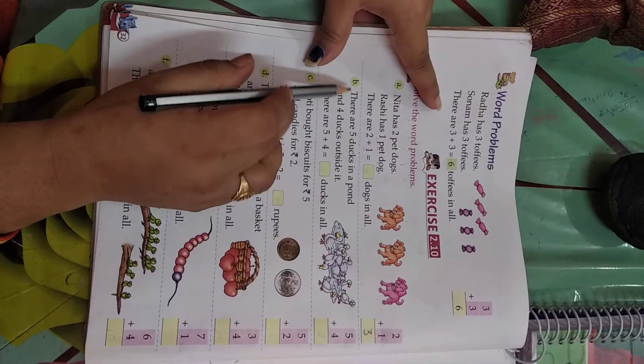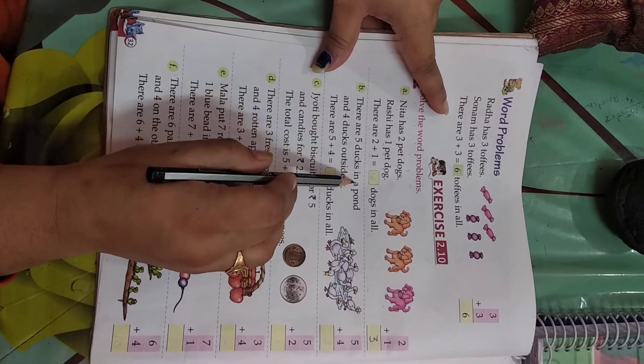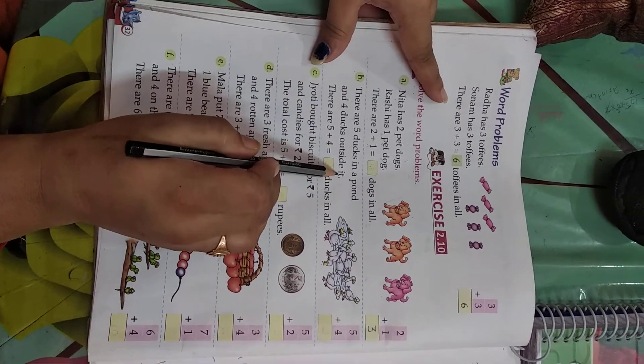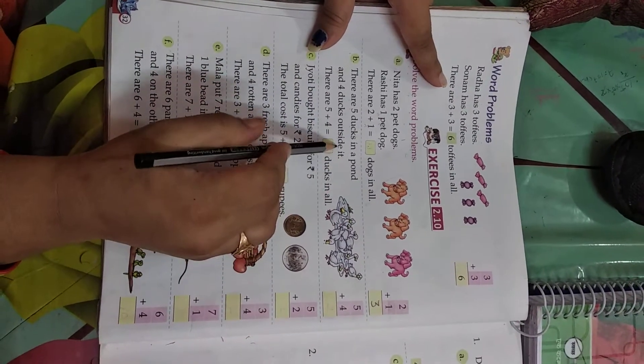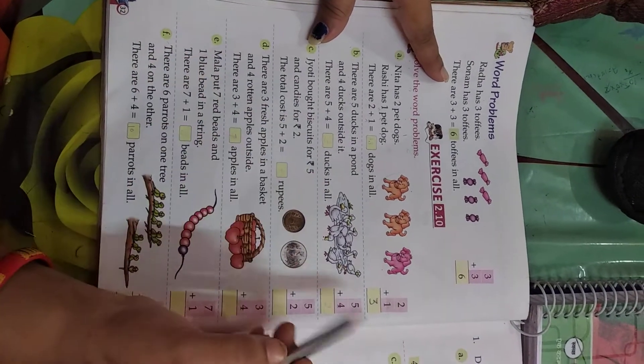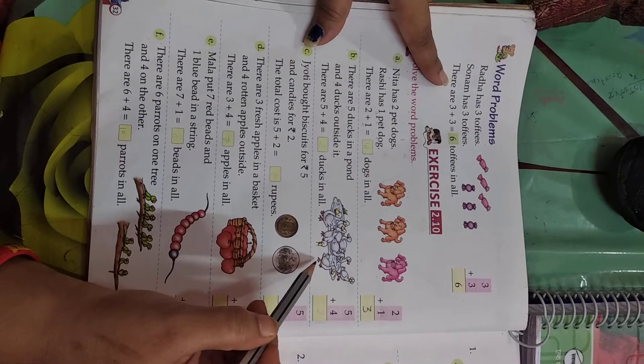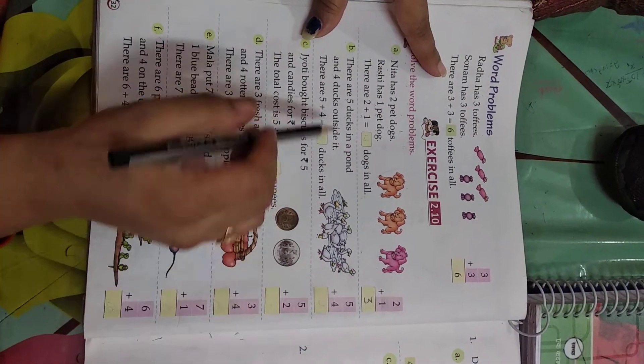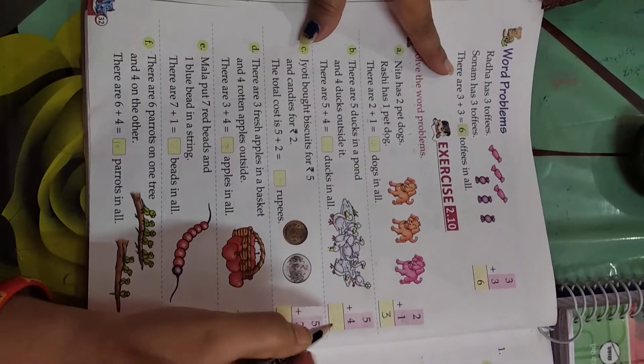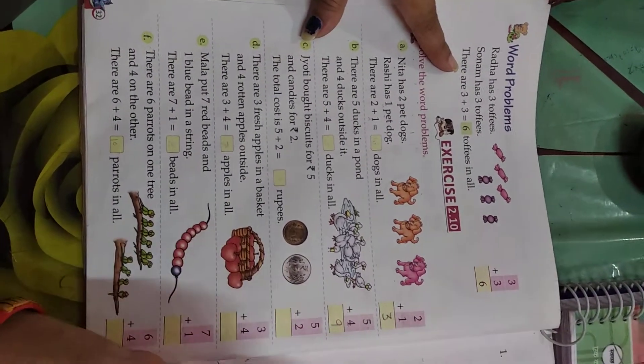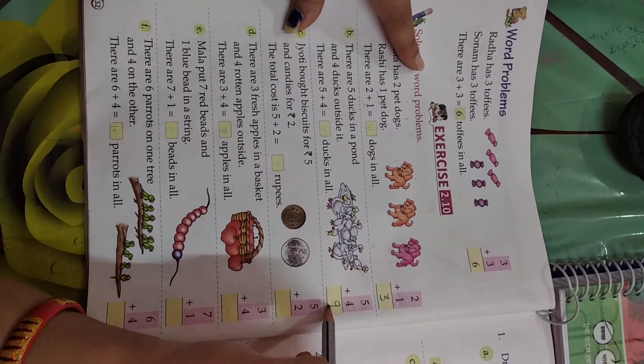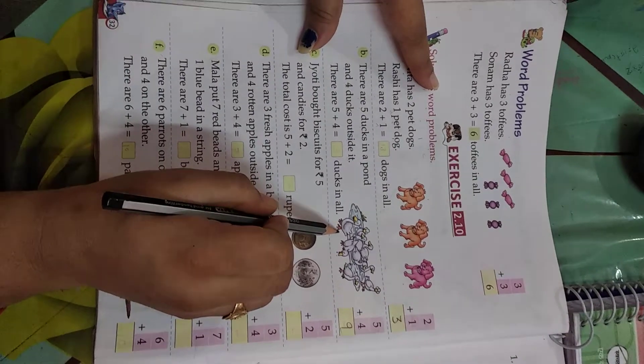Now, second one. There are five dogs in a pond and four dogs outside it. How many dogs are in the pond? We have to add them. Then we get the answer. Five plus four is equal to nine. So we got nine. So there are nine dogs in the pond.